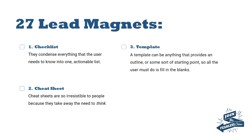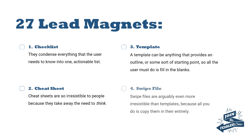Number three is a template. A template could be anything that provides an outline or some kind of starting point, so all the user has to do is fill in the blank. Website templates or Canva templates are quite common examples. Number four is a swipe file, which is even more irresistible than a template because all you have to do is copy and paste.